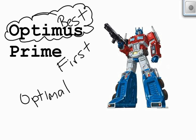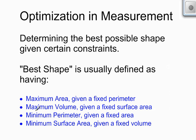It simply means the best. So what is the optimal drive to downtown means what's the best route we can take. Now, in optimization in mathematics, and specifically in measurement, generally means this: we're trying to determine the best possible shape given certain constraints. And best shape is usually defined as, for example, maybe I want the maximum area if I have a fixed perimeter.